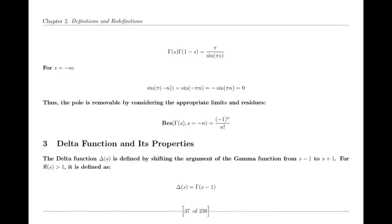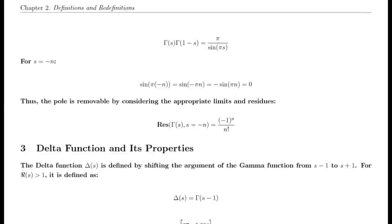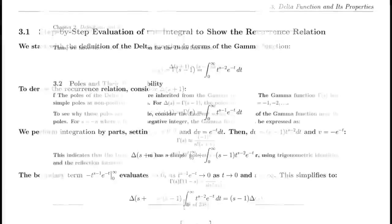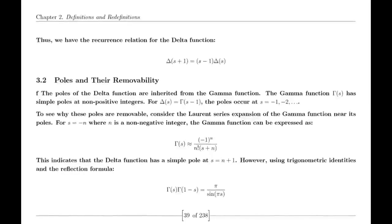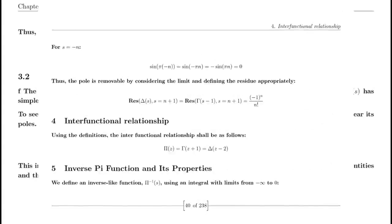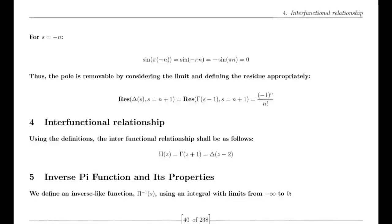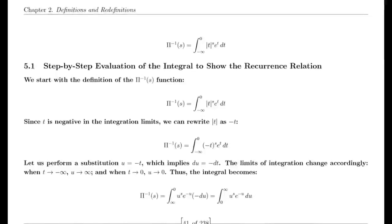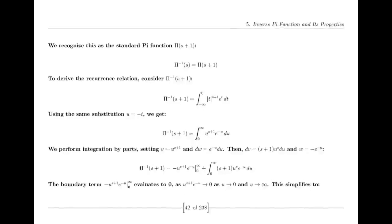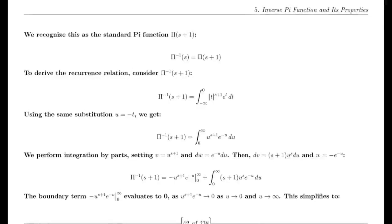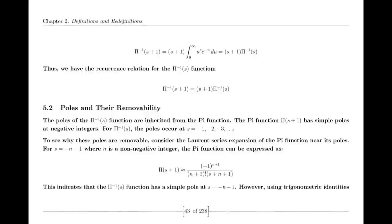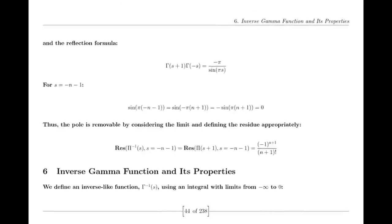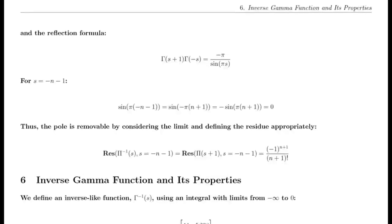Undeterred, Suraj took to social media, sharing more videos where he explained his ideas in layman's terms. He spoke about the fundamental theorem of arithmetic, illustrating how every integer could be uniquely factored into primes, and connected this concept to the behavior of the zeta function. Despite his best efforts, the mathematical elite remained divided — some applauded his courage in tackling such a monumental problem with accessible tools, while others dismissed his proof as naive. Yet a movement began to emerge among younger mathematicians and enthusiasts, captivated by Suraj's refreshing approach. They saw in his work a reminder that mathematics should be approachable and that profound ideas could arise from simple principles.